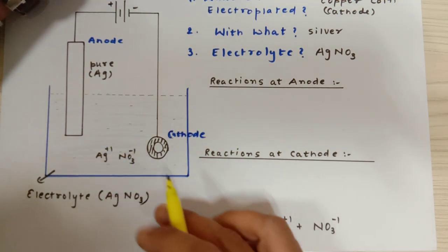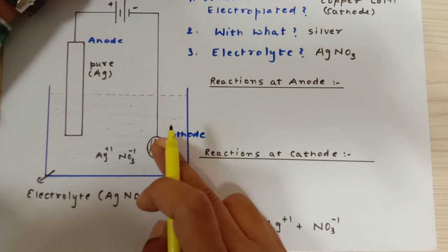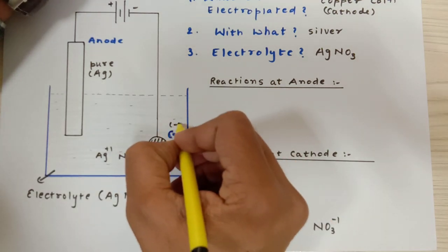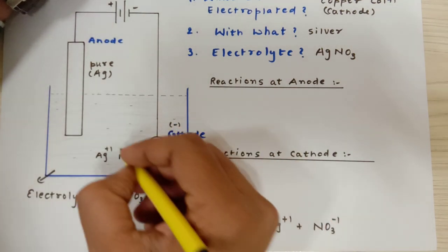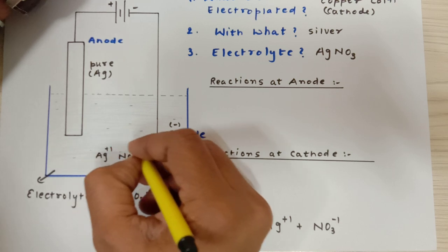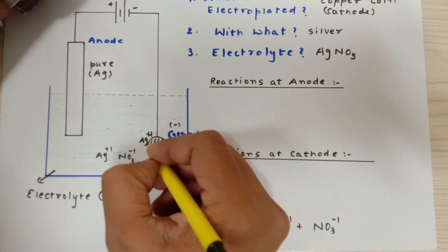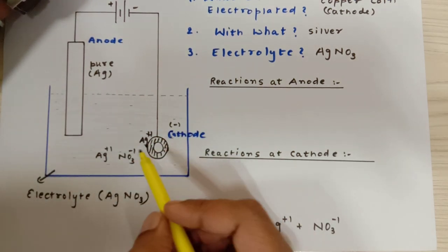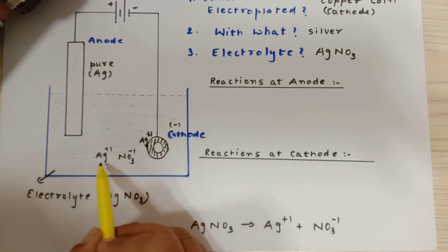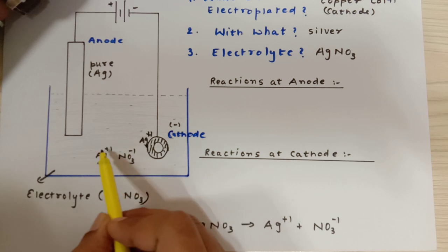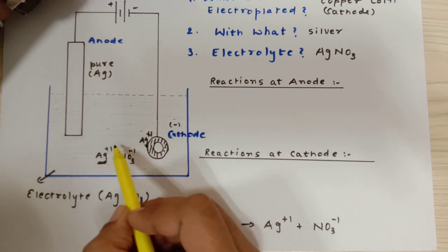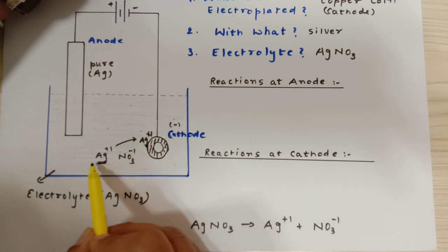Since Ag+1 is positive, it would try to go towards the negative plate, which is cathode. This Ag+1 will go to the cathode and it will stick over here. This Ag+1 is going to stick over here, thereby creating a vacancy over here because now this Ag+1 has already shifted over here. Now there is a vacancy of Ag+1 in the solution.